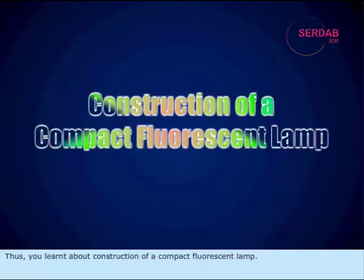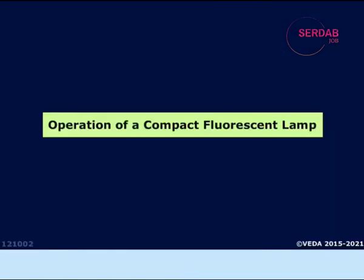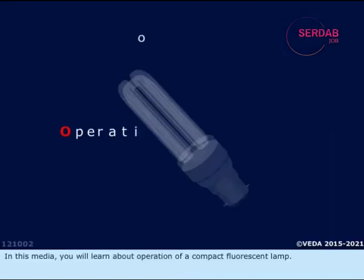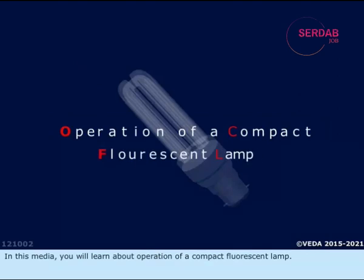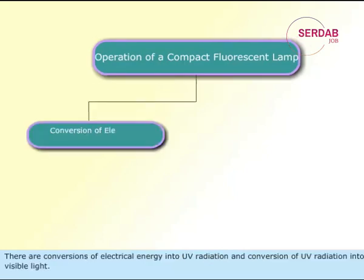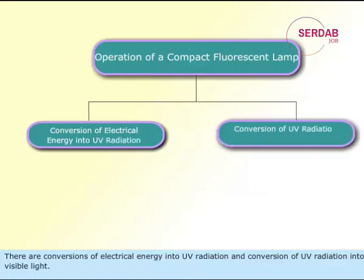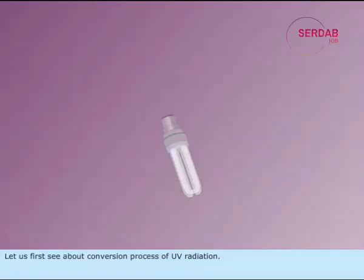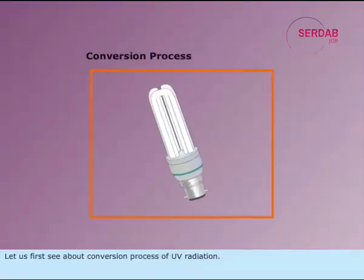Thus, you have learnt about construction of a compact fluorescent lamp. In this media, you will learn about operation of a compact fluorescent lamp. The operation of a compact fluorescent lamp has two processes: conversion of electrical energy into UV radiation, and conversion of UV radiation into visible light. Let us first see about the conversion process of UV radiation.